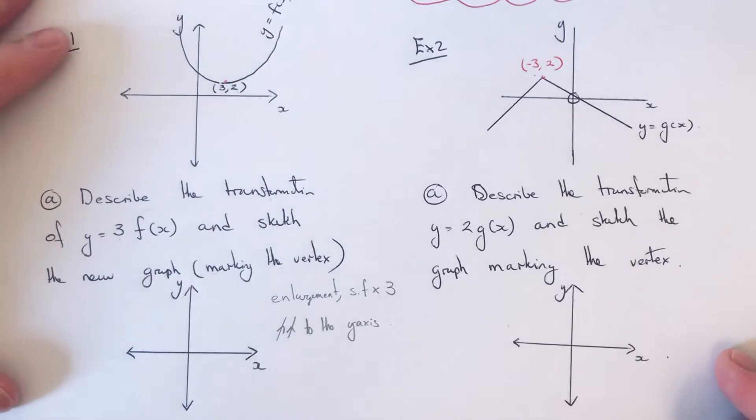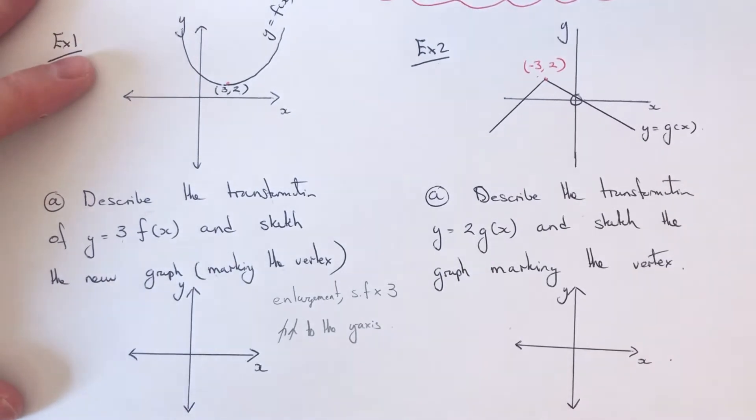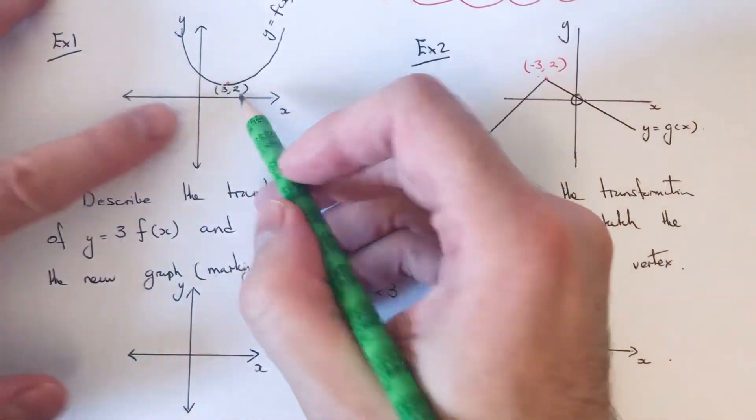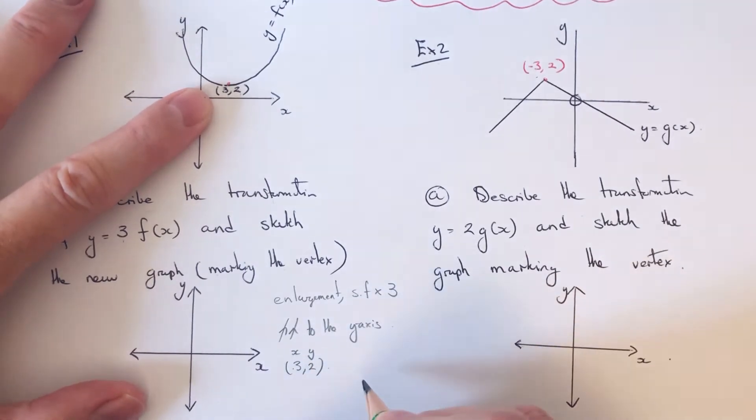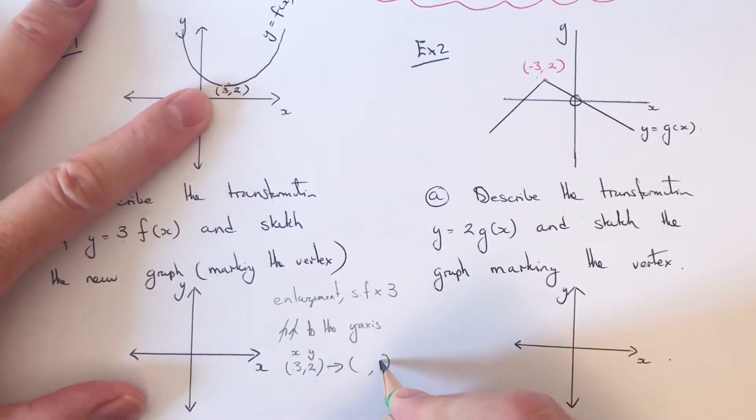What this means is we need to multiply all the y coordinates on our graph by 3. So that point there, 3 comma 2, the x coordinate is 3 and the y coordinate is 2. What we need to do is times this y coordinate by 3.